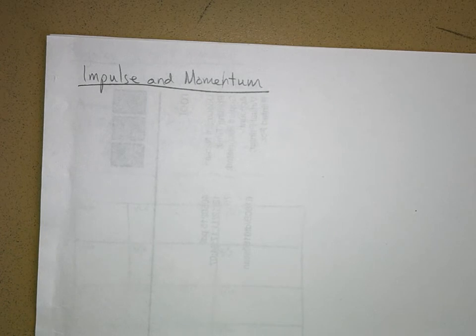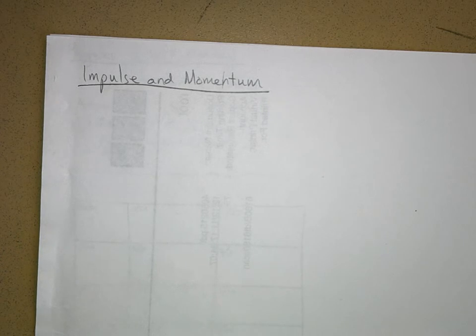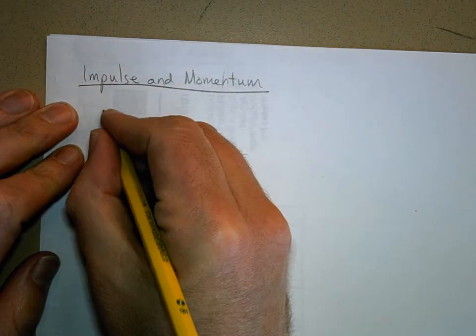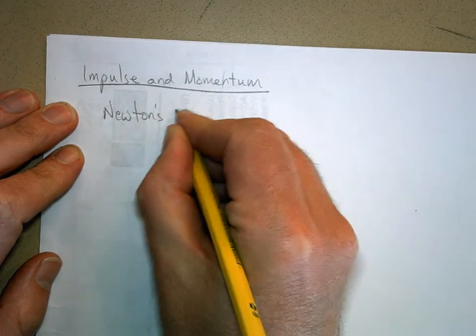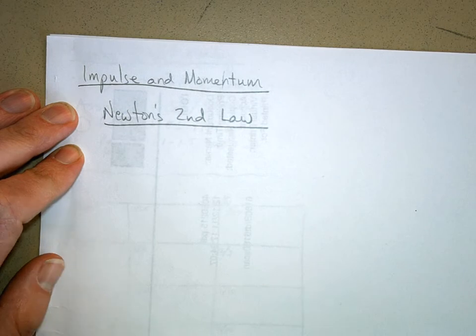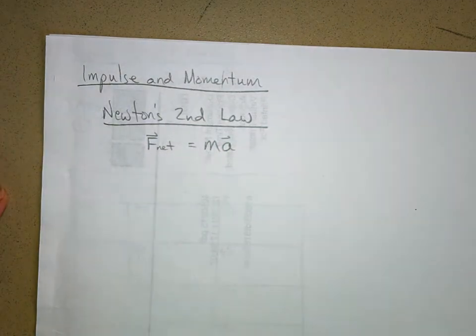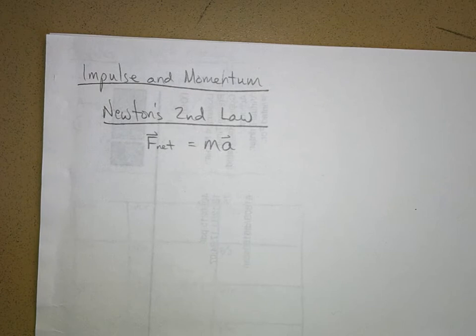We're starting a totally new subject here, although it relates to things we've already done. First unit of the new semester, we're going to talk about impulse and momentum. I'm going to start by saying that I haven't been completely honest with you, because I've been telling you that Newton's second law — the net force is equal to mass times acceleration — and that's true, but that's not really how Newton expressed his second law.